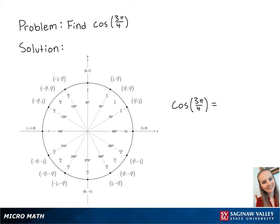For this problem, we're going to find cosine of 3 pi over 4. Looking at the unit circle, we can see that 3 pi over 4 lies here.